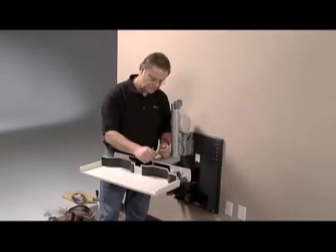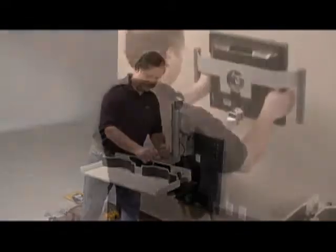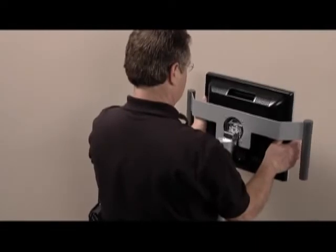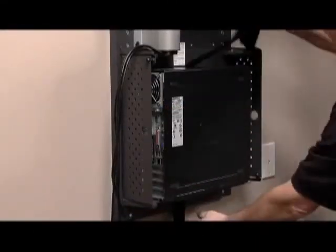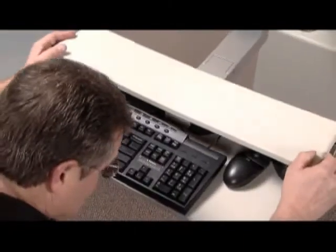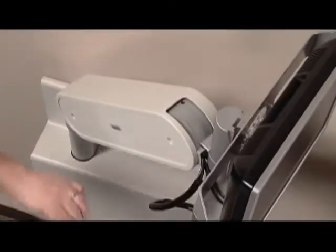ShareLink installs in this order. First, mount the lower unit, arm, and keyboard tray. Next, the monitor, followed by the cabling, computer, and covers. Then, final adjustments and a safety check.